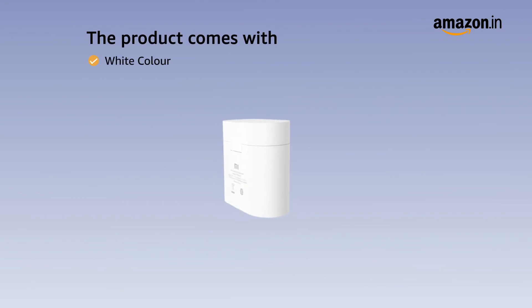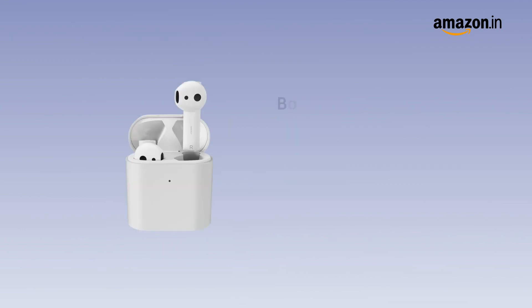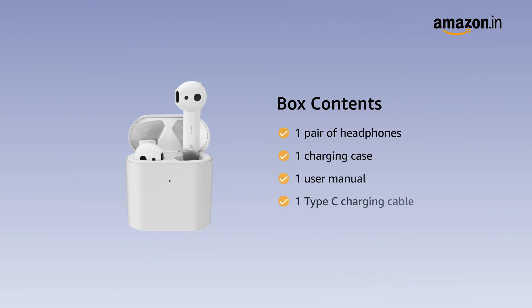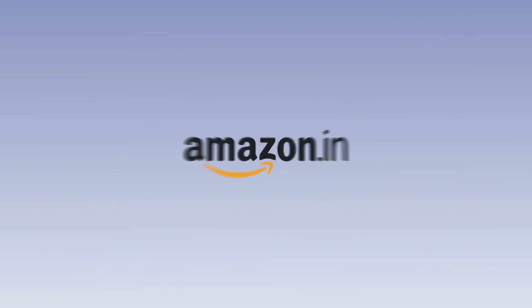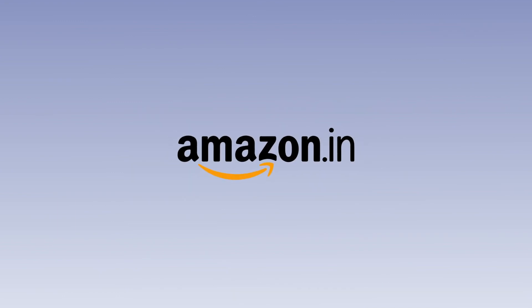The product comes in white colour with standard brand warranty. The box includes one pair of headphones, one charging case, one user manual, and one Type-C charging cable. For further information, visit the product detail page. We'll see you next time — thank you!